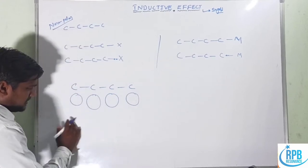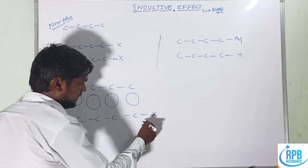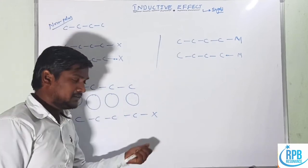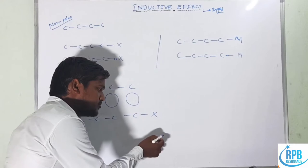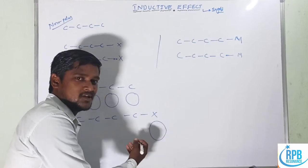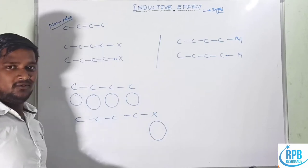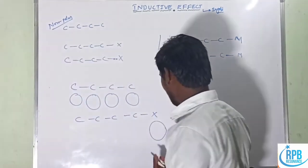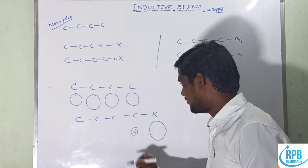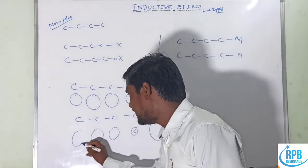Whenever carbon compounds are connected to a more electronegative atom, the bonded two electrons are attracted towards it. Then it becomes more electronegative, and automatically the carbon atom becomes less electronegative.